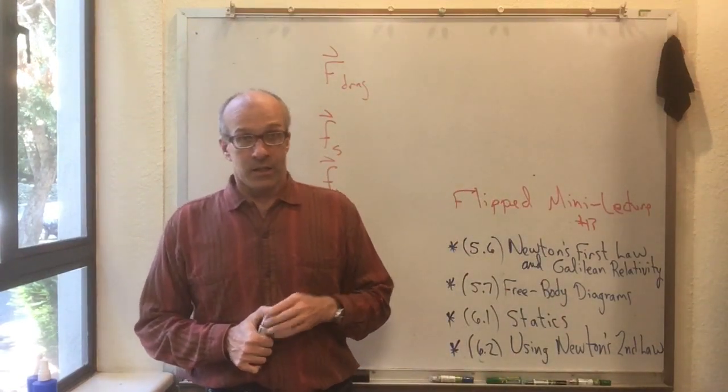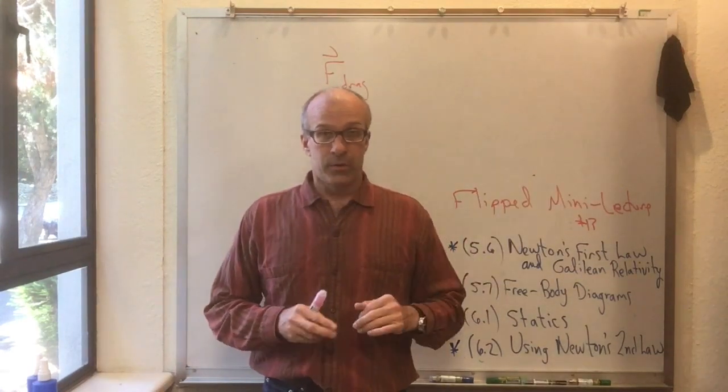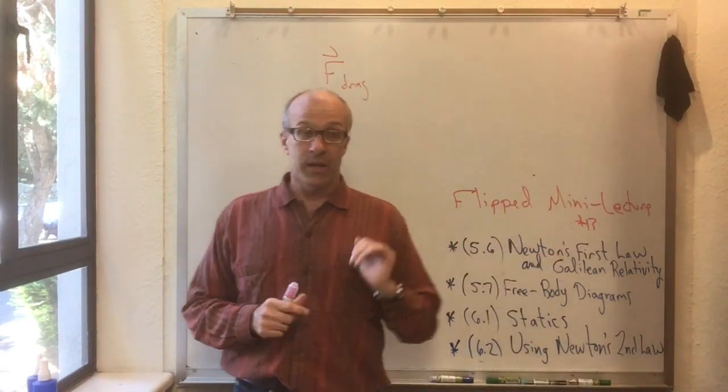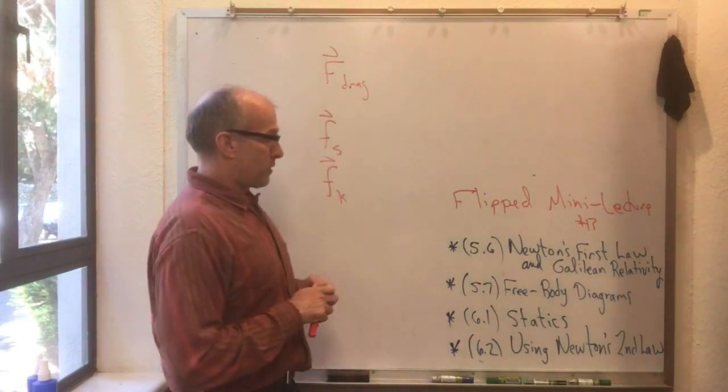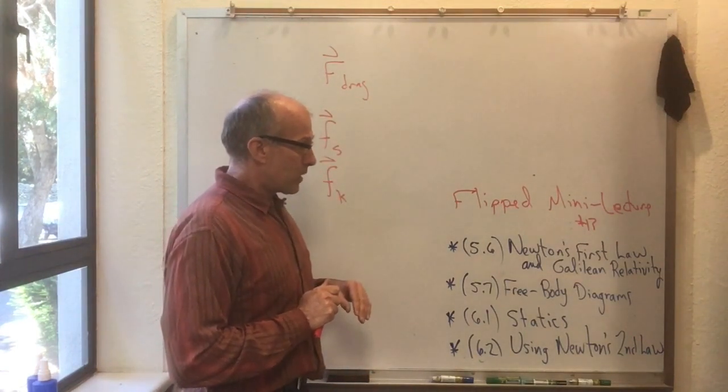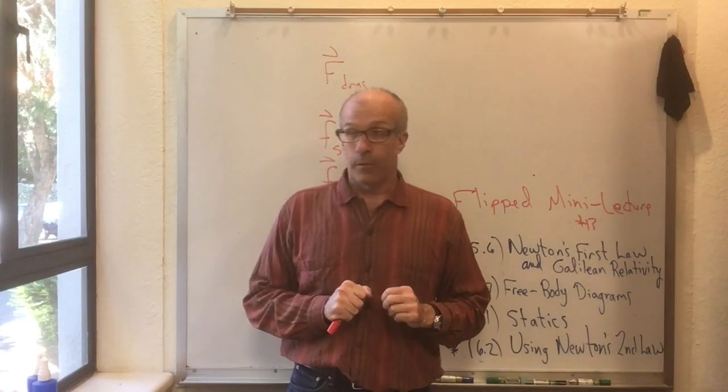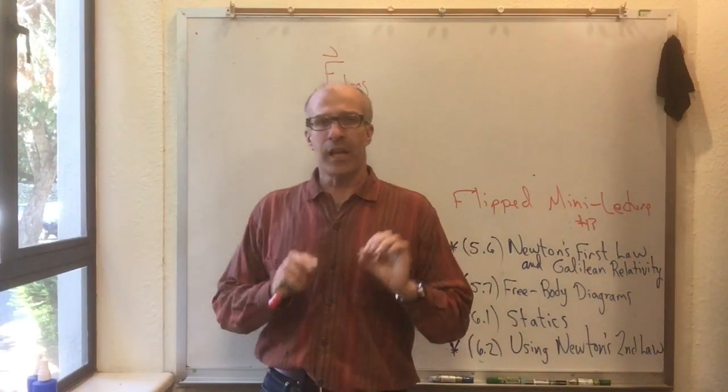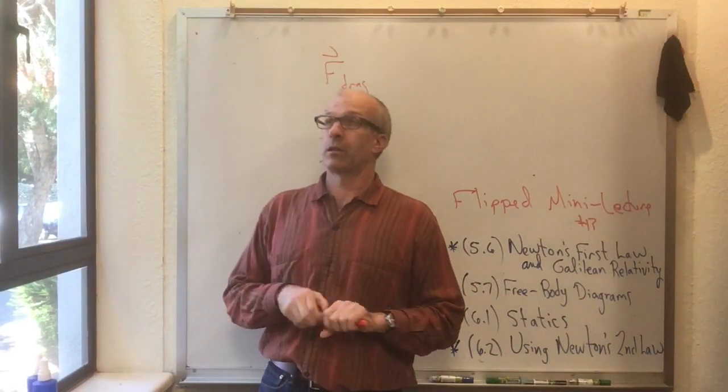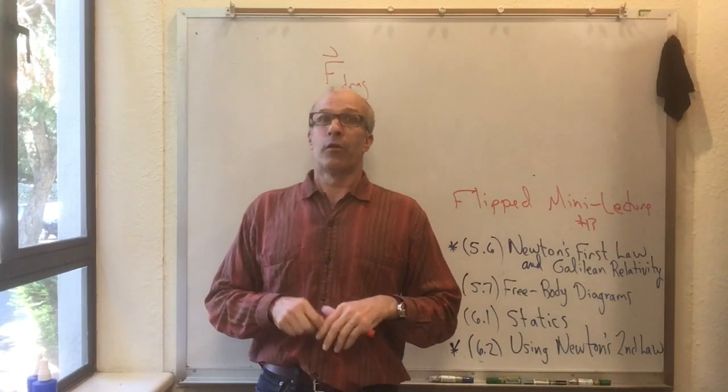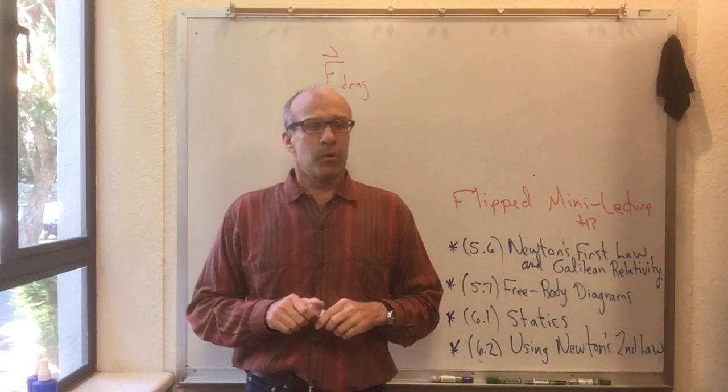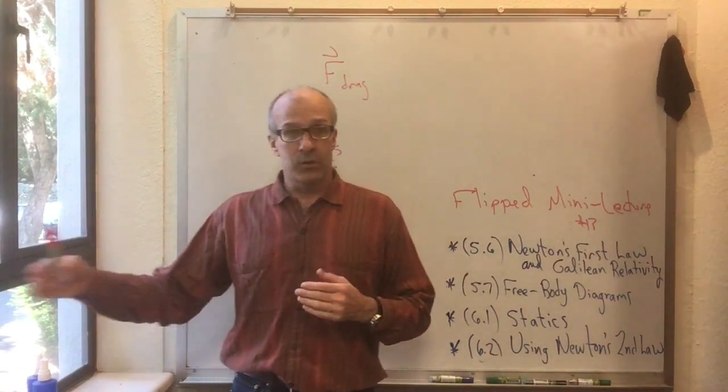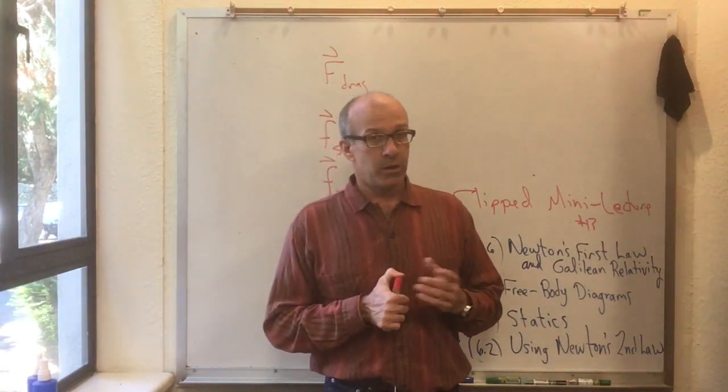And so for an observer that is accelerating around a corner, or an observer that is speeding up or slowing down, for those observers, it seems like Newton's first law doesn't work. So there's a set of preferred observers for whom Newton's first law doesn't work. And those observers are moving continuously with no acceleration relative to one another.